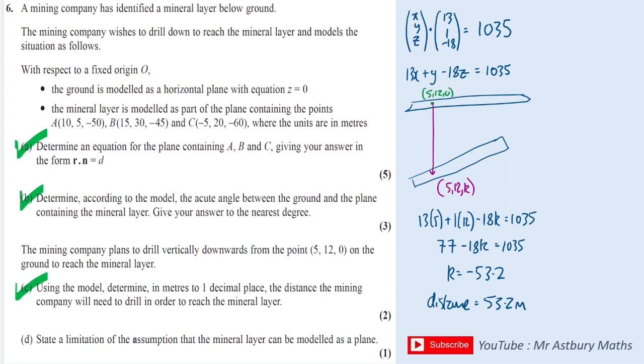And then part D is just a classic, what is the assumption of the model? And you've assumed that this plane is completely flat, so there are no bumps. And you've also assumed that it has zero thickness as well, both which are assumptions which wouldn't be true in real life. And we're done.